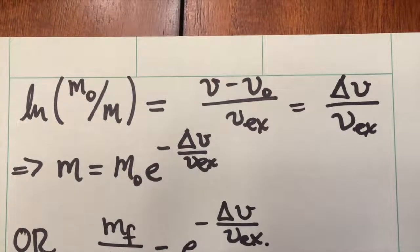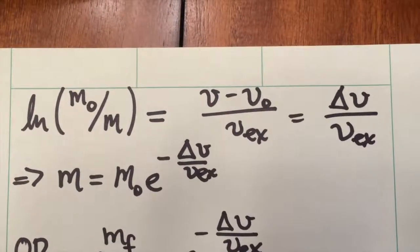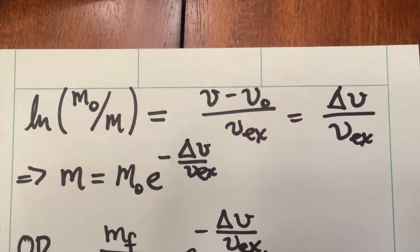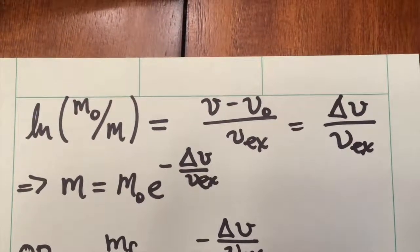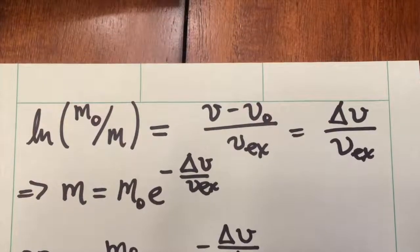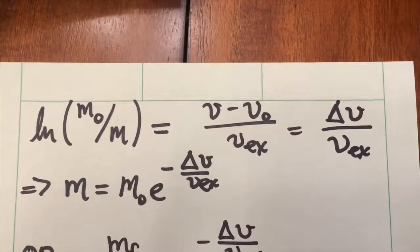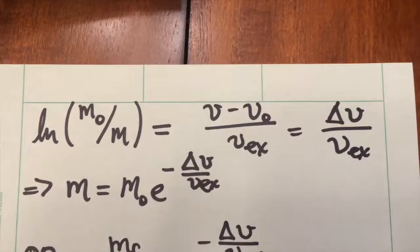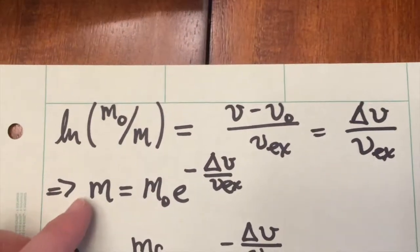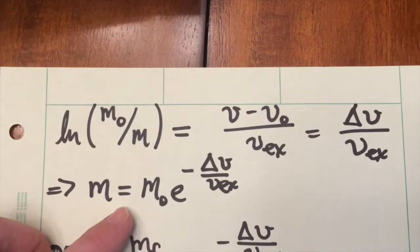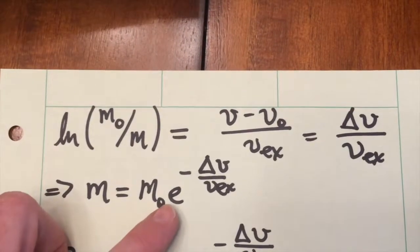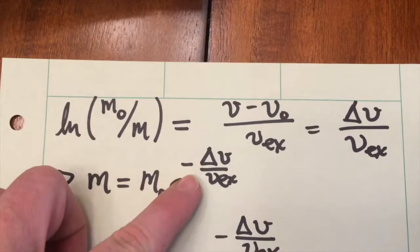We can rewrite this equation to solve for the change in mass from the initial mass m0 to the final mass, as a function of the delta v that we need for our rocket. So the delta v we might need to launch a spacecraft into orbit around the Earth, for example. What we find is an exponential dependence, that the final mass is equal to the initial mass times e to the minus delta v over v exhaust.